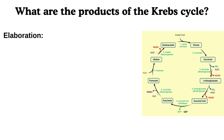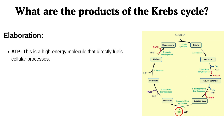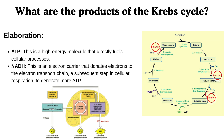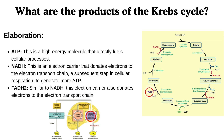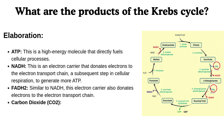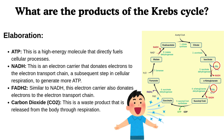Elaboration: ATP is a high-energy molecule that directly fuels cellular processes. NADH is an electron carrier that donates electrons to the electron transport chain, a subsequent step in cellular respiration, to generate more ATP. FADH2, similar to NADH, is also an electron carrier that donates electrons to the electron transport chain. Carbon dioxide is a waste product that is released from the body through respiration.